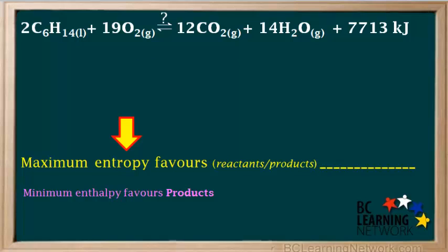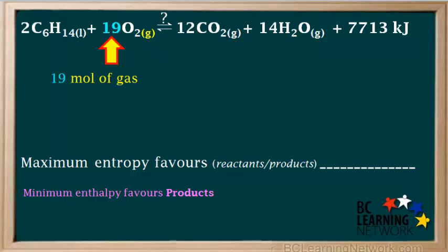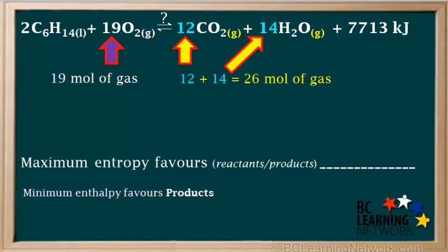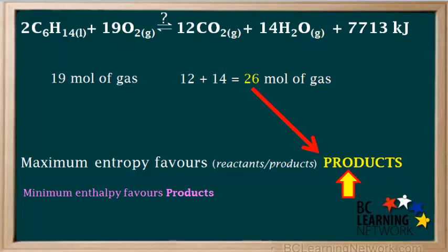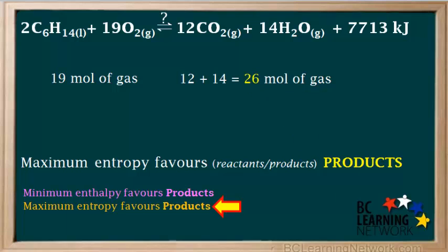The next question is whether maximum entropy favors reactants or products. To answer this we look for gases in the equation. We see there are 19 moles of gas on the reactant side and 12 plus 14 equals 26 moles of gas on the product side. Because there are more moles of gas on the product side, the tendency toward maximum entropy favors the products.